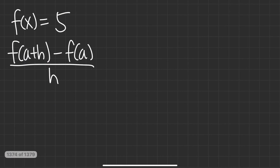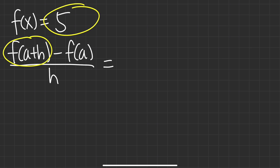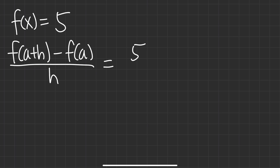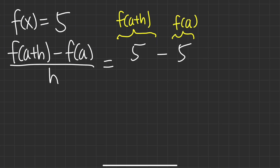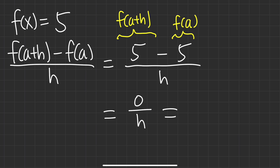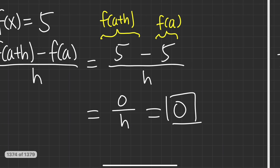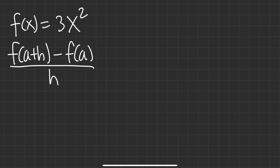For the next one, f of x is just equal to 5. It's also a linear function — what's the slope? Zero, and it's always going to be zero. To find f of a plus h, there's no x, so f of a plus h is just 5, and then minus f of a is just 5 as well. So we have 5 minus 5 over h, which is 0 over h — we get zero. Done.